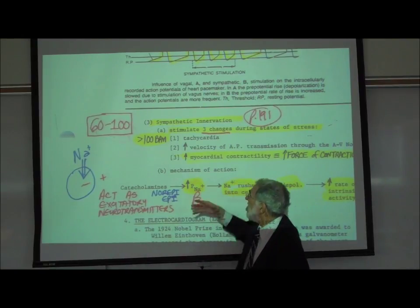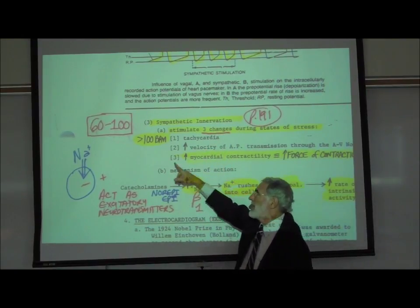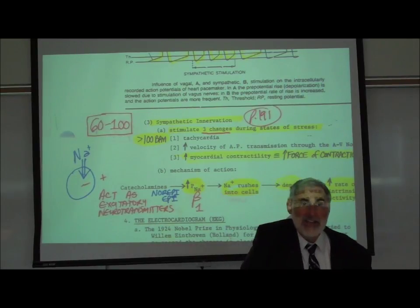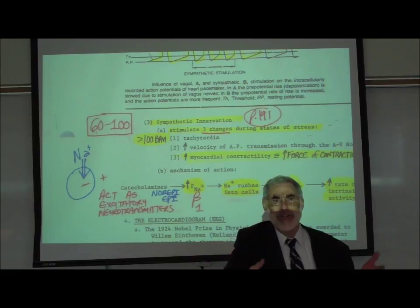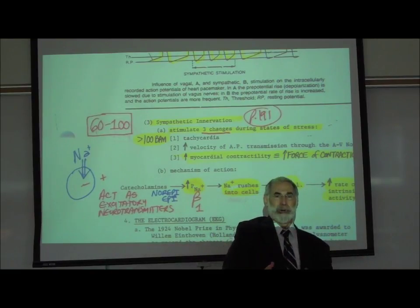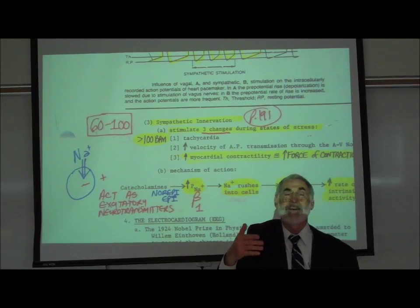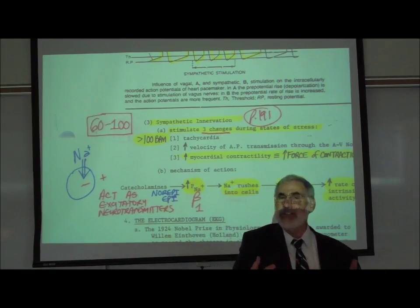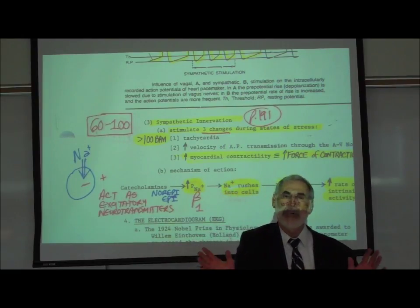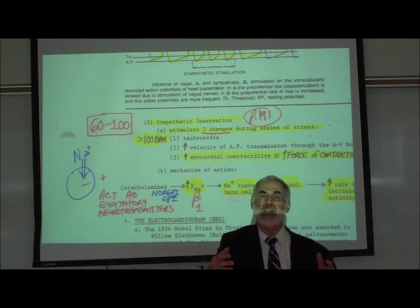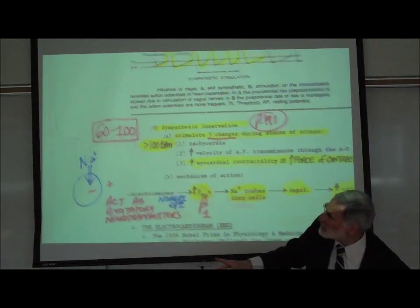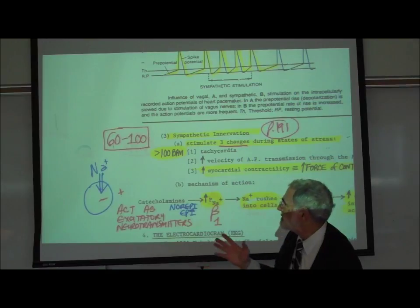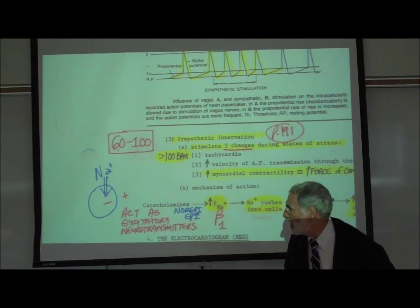The definition of tachycardia is a resting heart rate faster than 100 beats a minute. We all exhibit tachycardia when we are running, so a heart rate above 100 is expected during exercise. But you should not have a resting heart rate faster than 100 beats a minute. A resting heart rate of 95 beats a minute is on the fast side but not outside the normal range. The normal range for a resting heart rate is between 60 to 100 beats a minute.